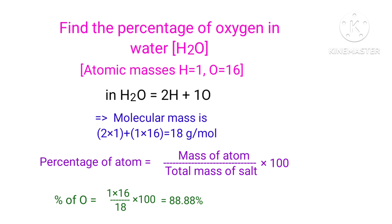In H2O, there is 1 oxygen atom present. So the percentage of oxygen is 1 into 16 by 18 into 100. That equals to 88.88 percentage.